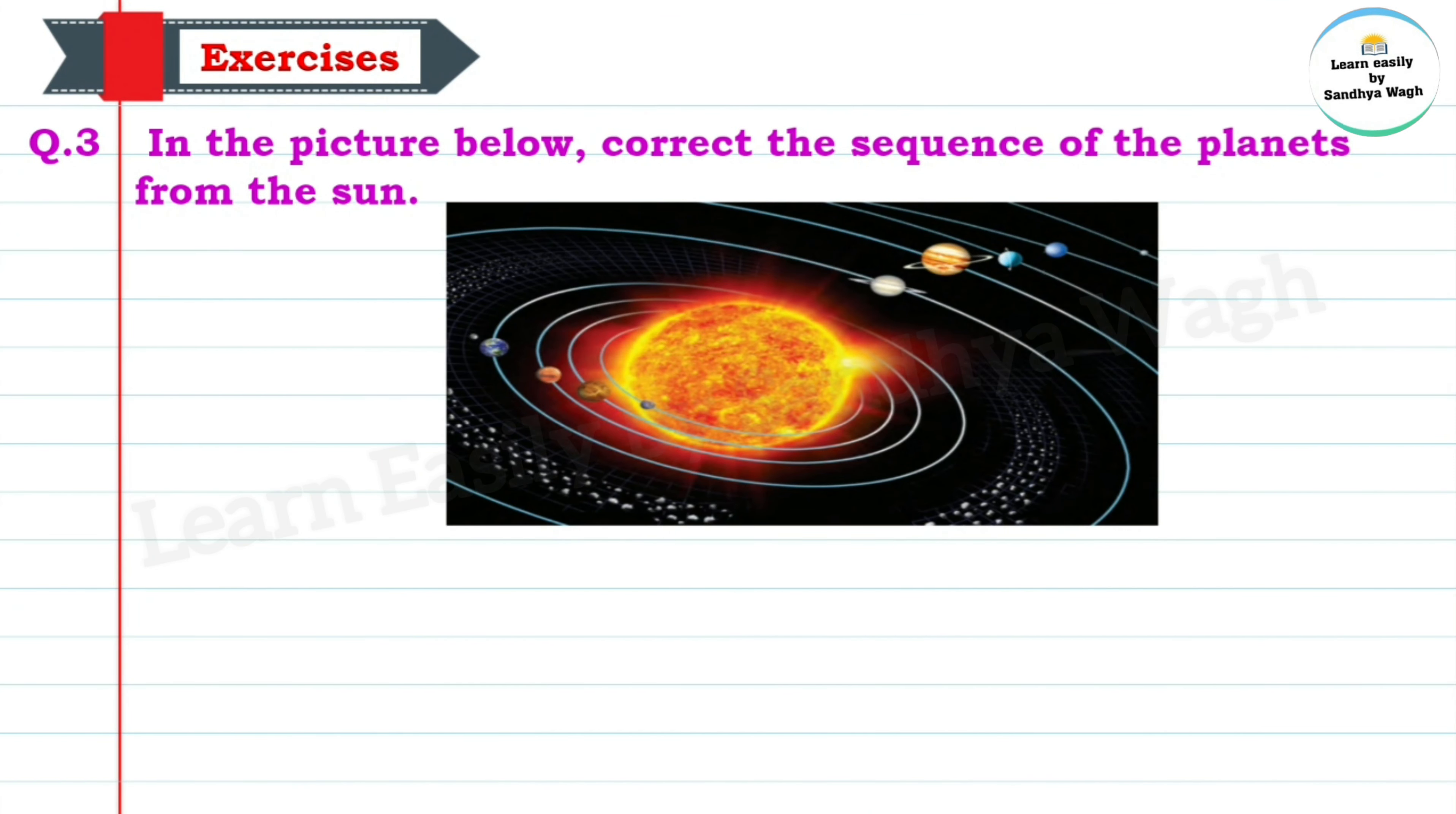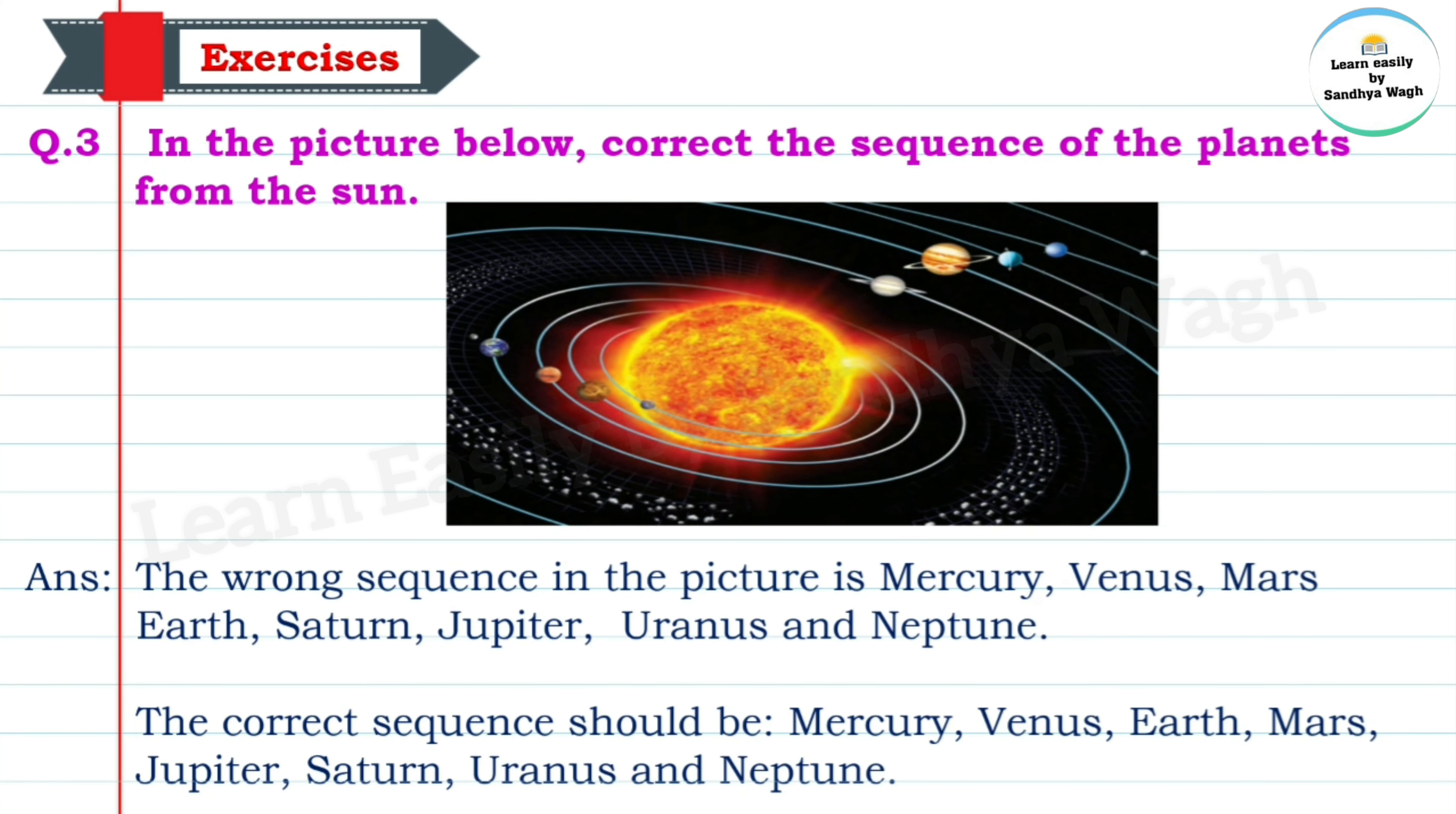Question 3: In the picture below, correct the sequence of the planets from the Sun. The sequence shown in the picture is incorrect. The correct sequence is: first is Mercury, second is Venus, third planet is Earth, fourth planet is Mars, fifth planet is Jupiter, sixth planet is Saturn, seventh planet is Uranus, and eighth planet is Neptune.